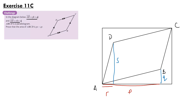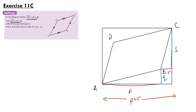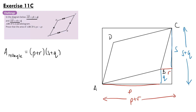Because this is a parallelogram, the vector bc equals the vector ad, so this distance is also r and this distance is also s. The red lengths p and r add up to give the width of the rectangle, and the blue lengths add up to give the height. Therefore, the area of the entire rectangle is equal to (p plus r)(s plus q), which expands to ps plus pq plus rs plus rq.